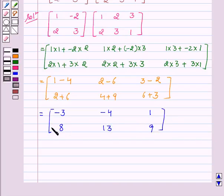Therefore, the product of the two given matrices is equal to minus 3, minus 4, 1, 8, 13, 9, which is the required answer. Hope you understood the solution and enjoyed the session. Goodbye and take care.